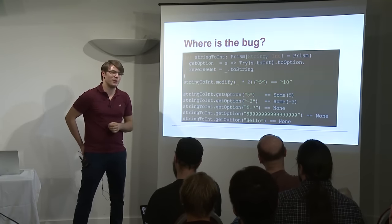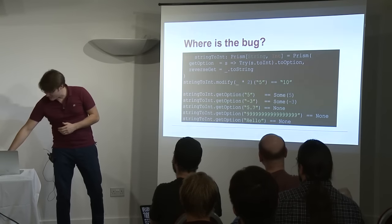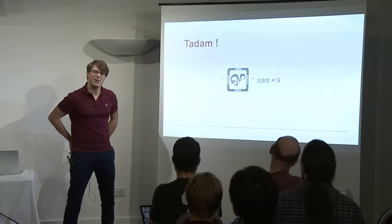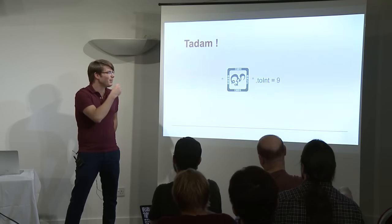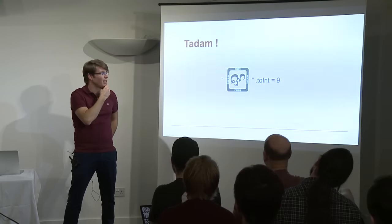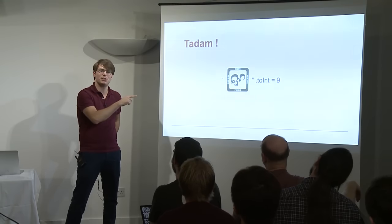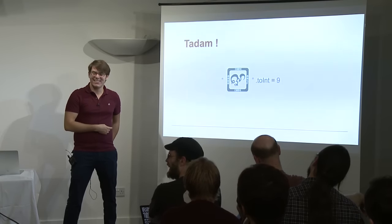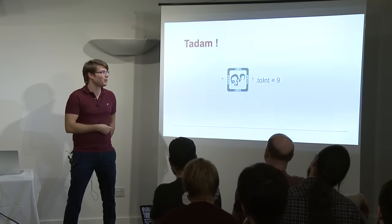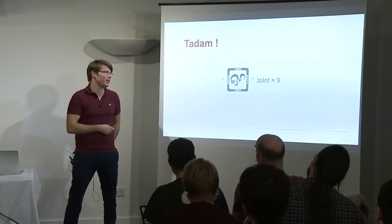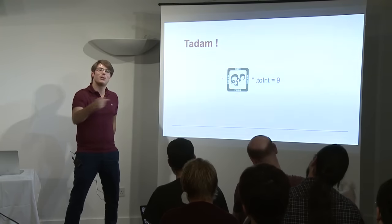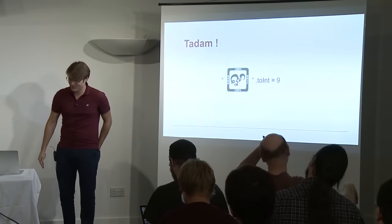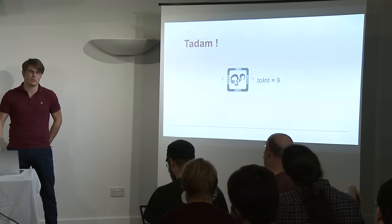There's an even fancier counter-example that really surprised me: ScalaCheck found a Unicode character — I think a Cambodian or Vietnamese character — that actually represents the digit 9. Java's parseInt is clever enough to recognize it as digit 9, so calling parseInt on it gives you 9. But there's no way to come back to this symbol via toString. That's another way you can break this prism. Laws are really useful to get things correct.